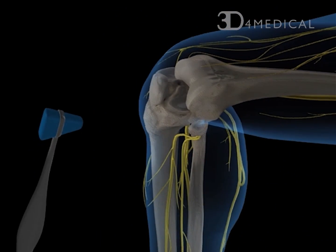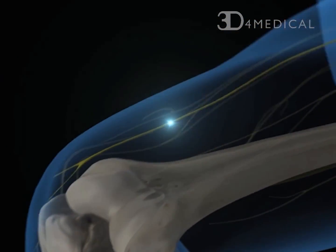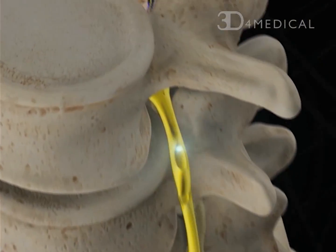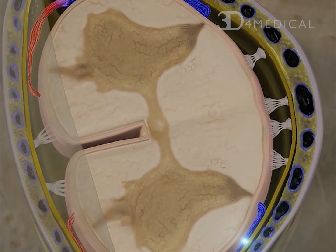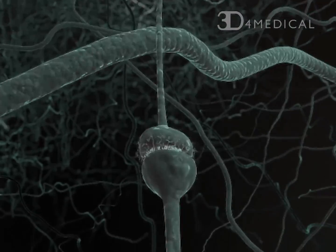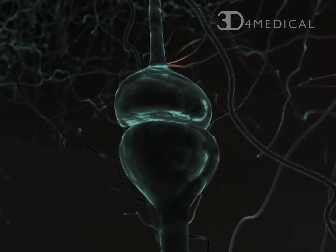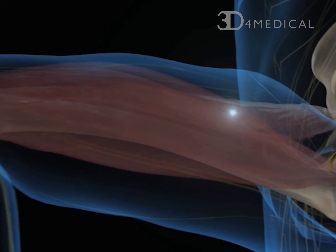A two-neuron reflex arc carries a signal by sensory neurons from the tendon and muscle to nerves that supply that muscle at the spinal cord. The signal then returns to the muscle via motor neurons. This causes a motor response or jerk.